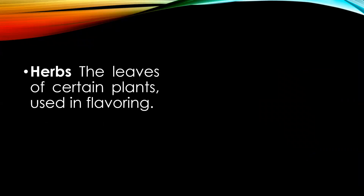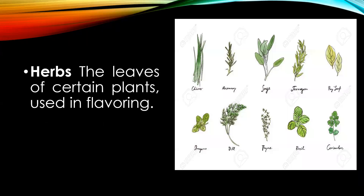Herbs add value when used in the cooking process or chopped and sprinkled over finished products. They are available in fresh, dried, and frozen form. The most common ones include chives, rosemary, sage, tarragon, bay leaf, oregano, dill, thyme, basil, and coriander.